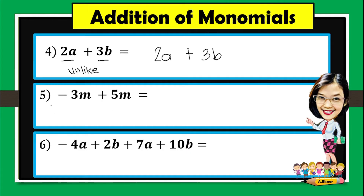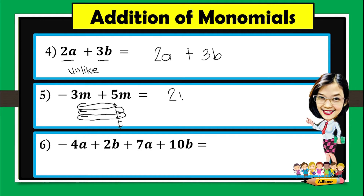For number 5, negative 3m plus 5m. So in here, we're going to apply what we have studied about addition of integers. So negative 3 and positive 5. A pair of positive and negative numbers lead you to 0. Which means we have here 2m, because 2 positives were left.